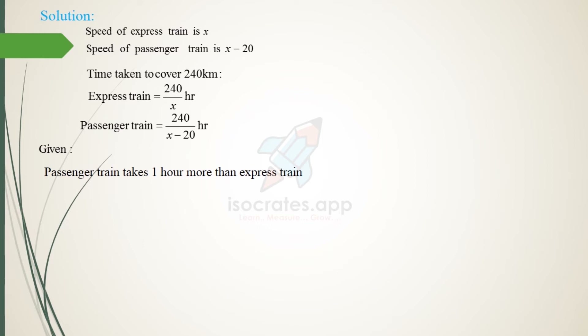The time for the passenger train, 240 divided by (x minus 20), minus the time for the express train, 240 divided by x, equals 1. This gives us: 240 multiplied by [1/(x minus 20) minus 1/x] equals 1.